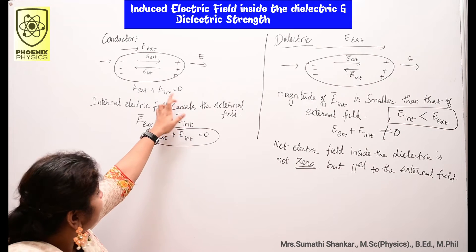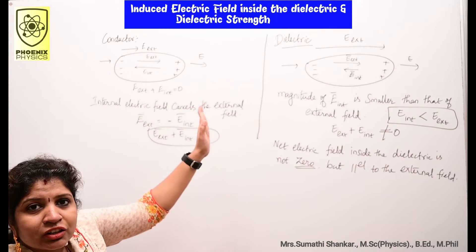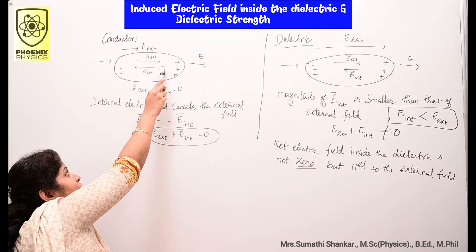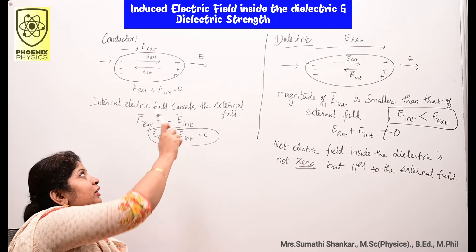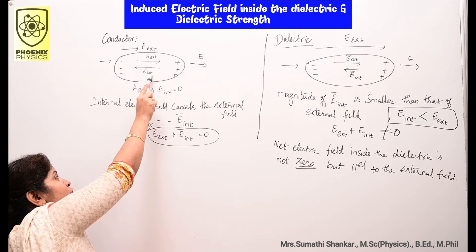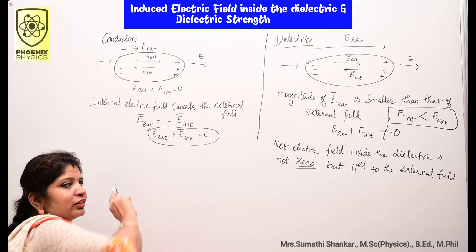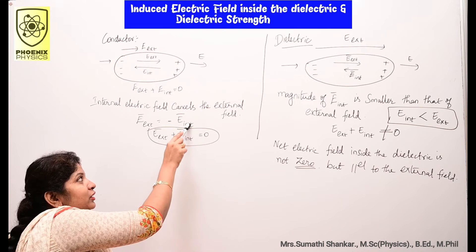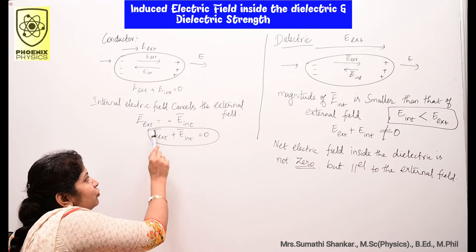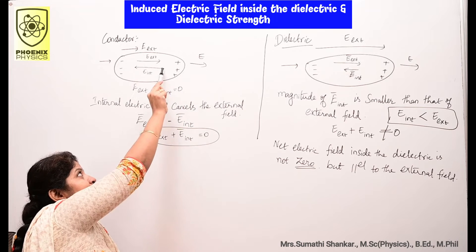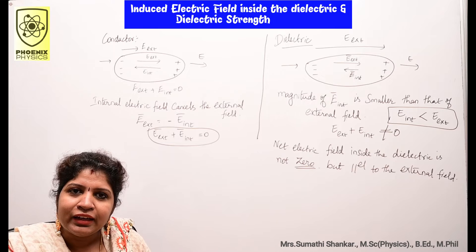the positive charges are moved in the direction of the external field and the negative charges are moved in the opposite direction. An internal electric field is produced which cancels the external electric field, because E internal is just opposite to E external, so the net field is zero inside the conductor.